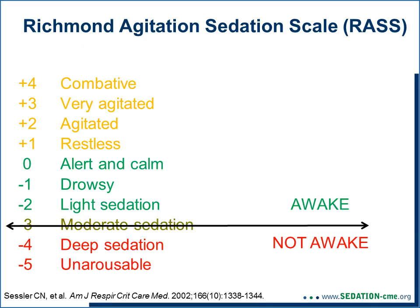With the RASS, a similar range for a lightly sedated patient would be between 0 and minus 2. A RASS of minus 3, defined as a patient who opens their eyes but does not make eye contact, is somewhat controversial. Studies have shown that a significant number of patients with a RASS of minus 3 do not meet usual criteria for being awake. We generally consider light sedation to be a RASS of 0, minus 1, or minus 2.